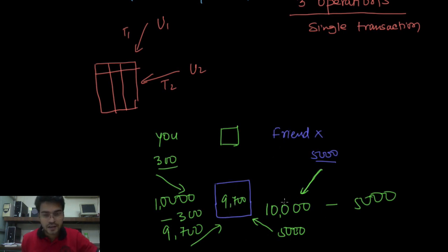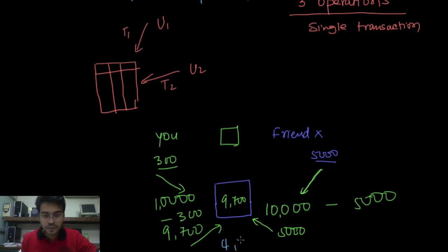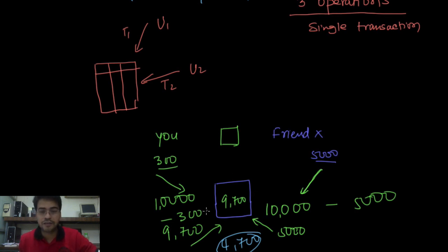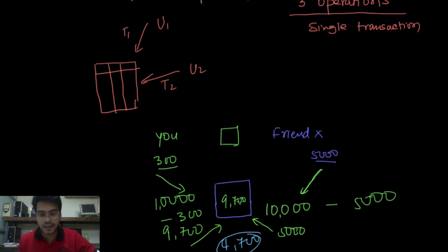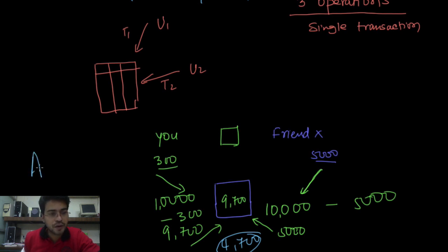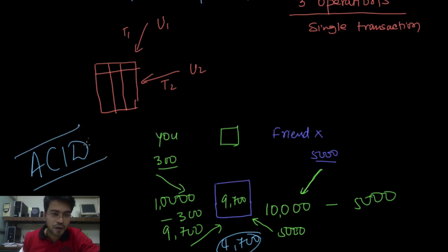Many problems like this may occur if we don't manage transactions. We need a mechanism to ensure correctness of the result — the outcome should be 4700. To ensure this, we will apply mechanisms like locking the data until it is written back. In the next video, we will study the problems that can occur and the basic properties of a transaction, which we call ACID properties. See you in the next lecture. Thanks for watching.